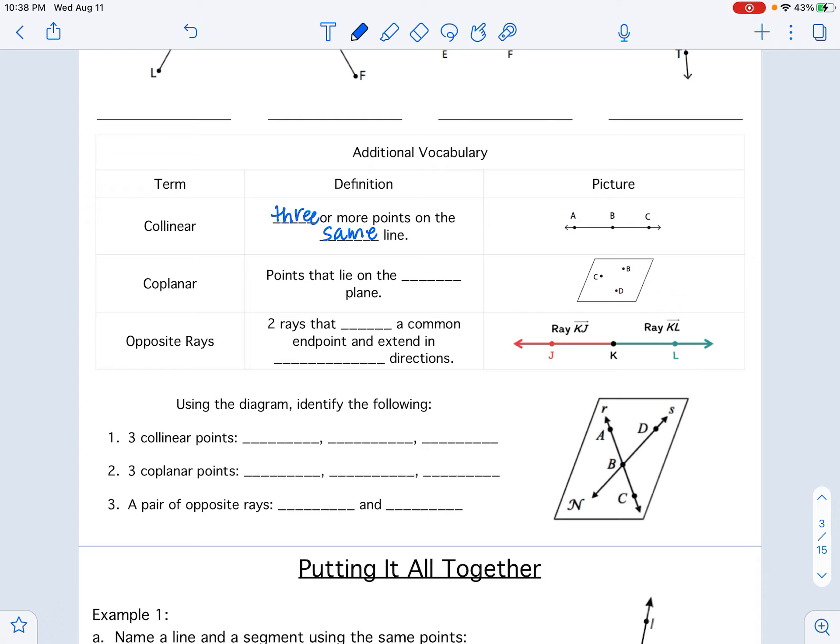Coplanar, kind of similar to collinear. They're all points that lie on the same plane. That does not mean they have to lie on the same line. So if you notice this one, C, B, D, they do not lie on the same line if we were to draw them. But they are all on the same plane.